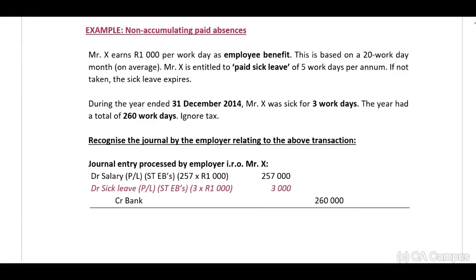Example: non-accumulating paid absences. Mr. X earns a thousand rand per work day as employee benefit, based on a 20 work day month on average. Mr. X is entitled to paid sick leave of five work days per annum; if not taken, the sick leave expires. During the year ended 31 December 2014, Mr. X was sick for three work days. The year had a total of 206 work days.